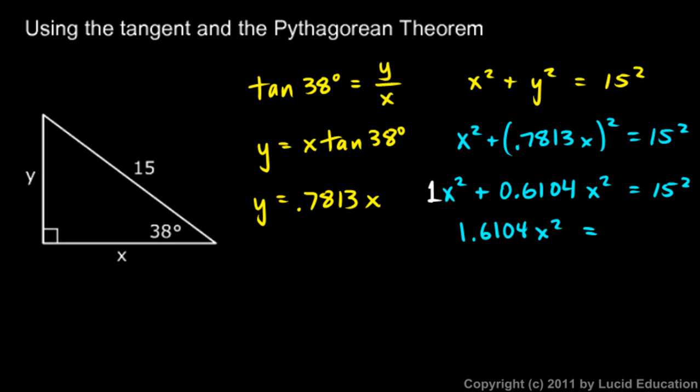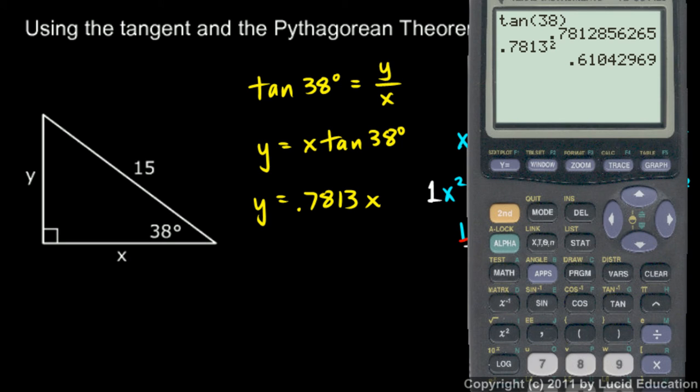15 squared is 225, so now we just divide both sides by 1.6104, and we get x squared equals—and we do this on the calculator—225 divided by 1.6104, that gives me 139.7.